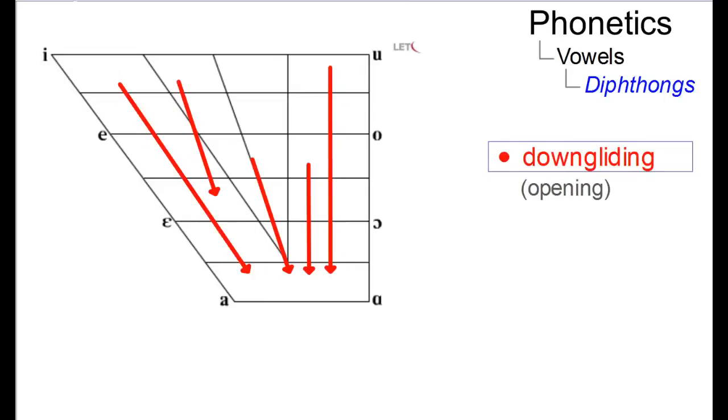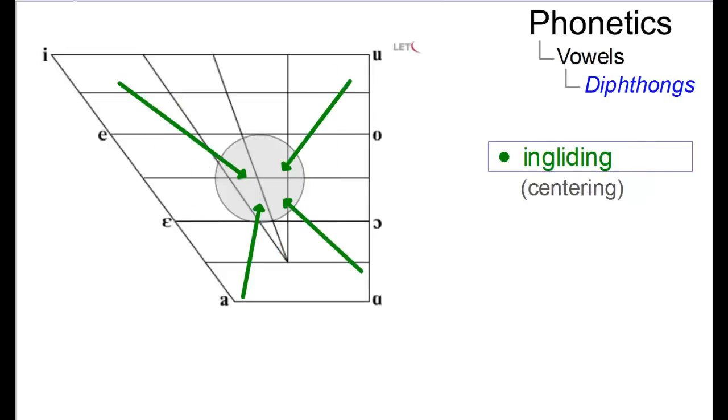As downgliding or opening, where the onset is higher than the offset, and as ingliding or centering, where the offset is a central vowel.